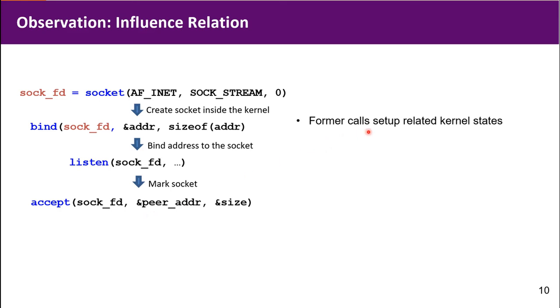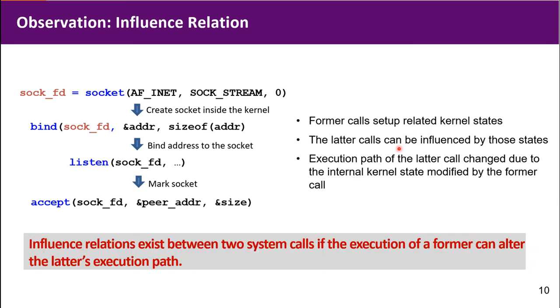Then we accept external connections from this socket using the accept syscall. As we can see, each former call sets up the related kernel state for the latter call, and the latter call can be influenced by those states.